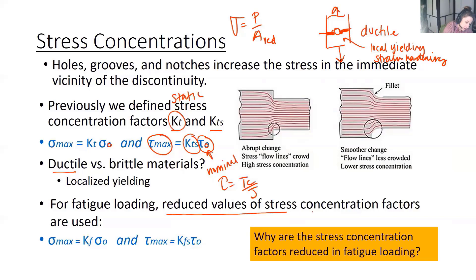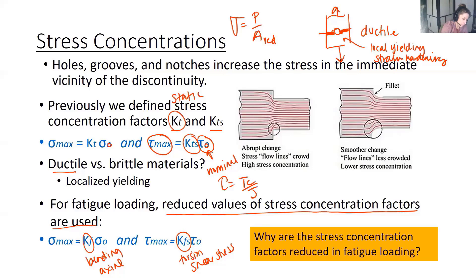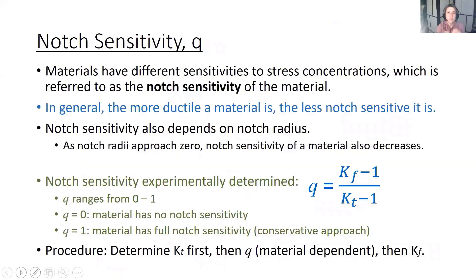We use reduced values of fatigue stress concentration factors: KF for bending and axial loading, and KFS for torsion (shear stress). Stress concentration factors are reduced in fatigue loading compared to static — because when something oscillates between tension and compression, there's a point in time where the fibers aren't fully loaded, giving some stress relief. This is why we use these reduced factors for stress concentrations in fatigue.